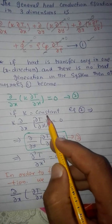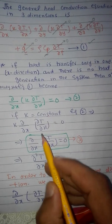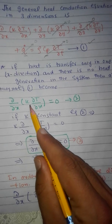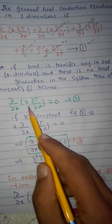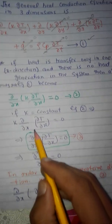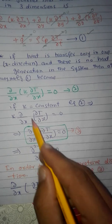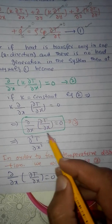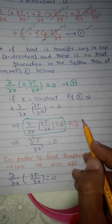Now if the thermal conductivity of the material is constant, then in equation 2 the thermal conductivity k comes out of the bracket, and we obtain equation number 3.